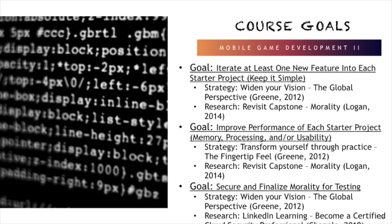In Mobile Game Development 2, I will iterate at least one new feature into each starter project, keeping it simple and finding the low-hanging fruit by revisiting my capstone — particularly the Morality project — and widening my vision to prioritize new features. I'll improve performance of each starter project by expanding on memory, processing, and usability. I will also look into LinkedIn Learning's 'Become a Certified Cloud Security Professional' to apply my cybersecurity background to the new game.